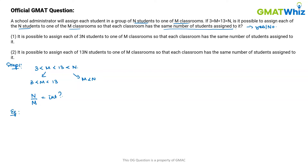Let's understand this with an example. If n equals 16 — keep in mind n needs to be greater than 13 — and m equals 4, which also satisfies the range, then n over m is 16 over 4, which is 4. This means each classroom has 4 students and they are divided equally.